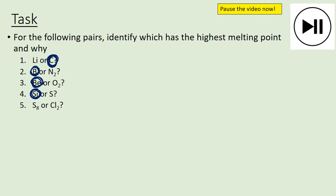Question five is tricky because S₈ and Cl₂ are both simple molecules with weak van der Waals forces. However, because S₈ is a larger molecule, it has stronger van der Waals forces. S₈ has a bigger molecular mass, more electrons, and more van der Waals interactions — so S₈ has the higher melting point in this case.